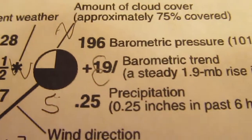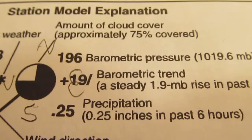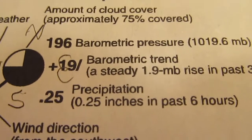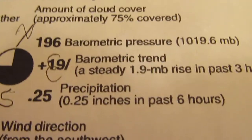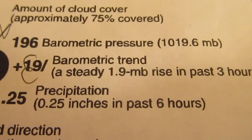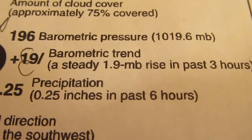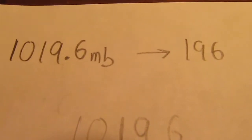All right, so we talked about the fact that air pressure on these station models has a little bit of conversion that you need to do. Here they're showing the number 196, and they're saying that represents 1019.6 millibars. It's really easy to convert from millibars to the code you put on the station model. If we've got the number 1019.6, what we're going to do is get rid of the 10.